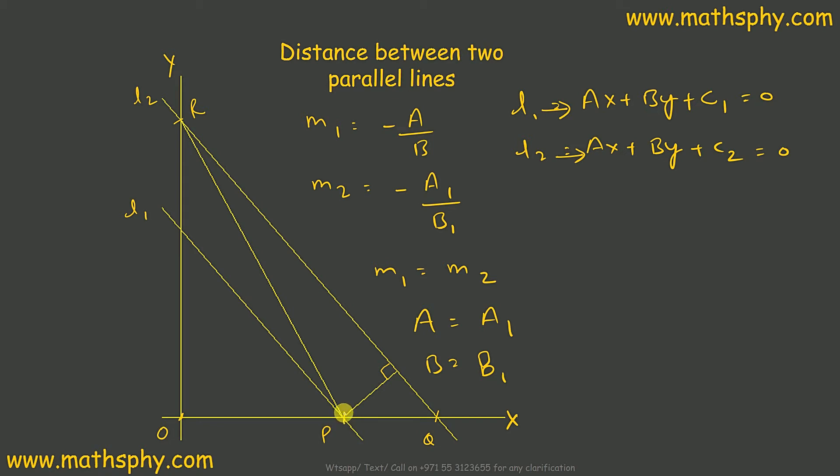This is the x-intercept for line l1, in that case this would be negative c1 over a, comma 0. This is the y-intercept for l2, so this would be 0 comma negative c2 over b.